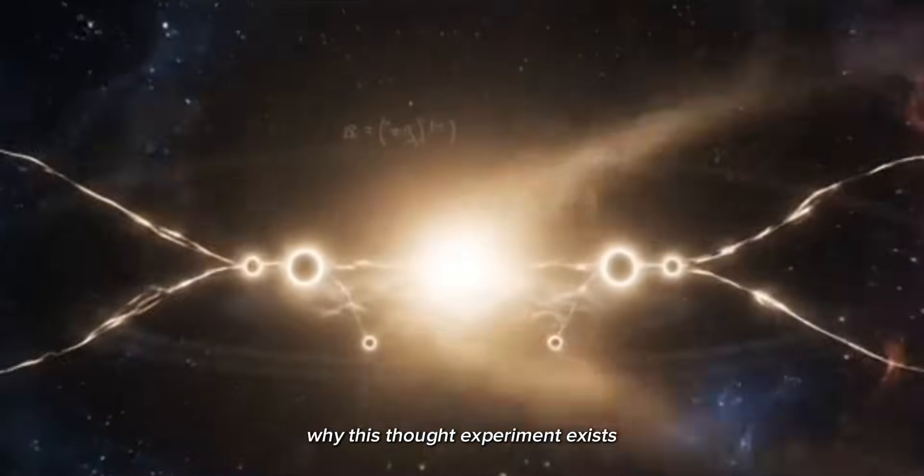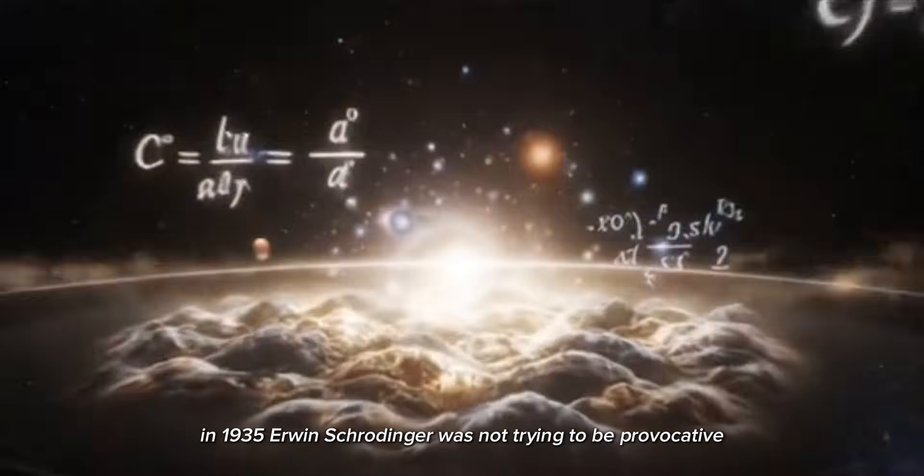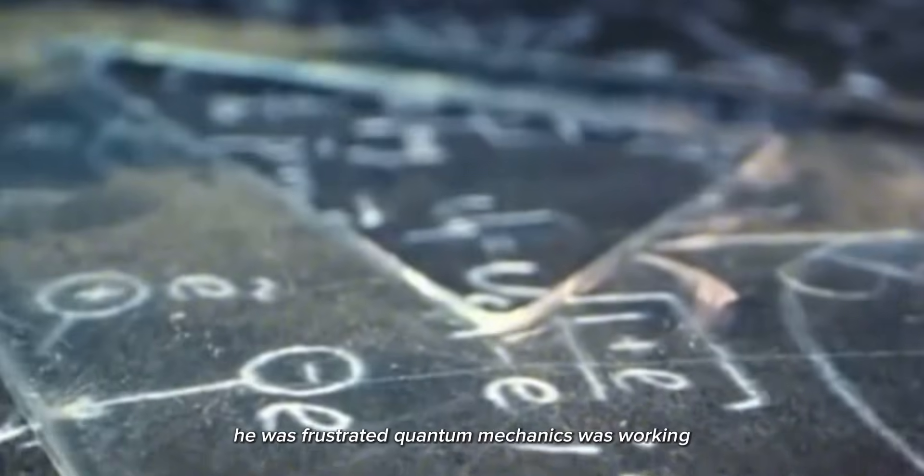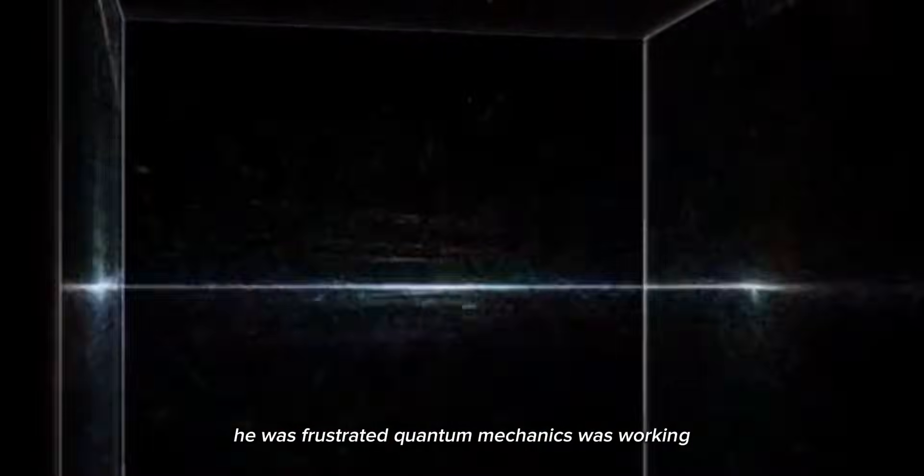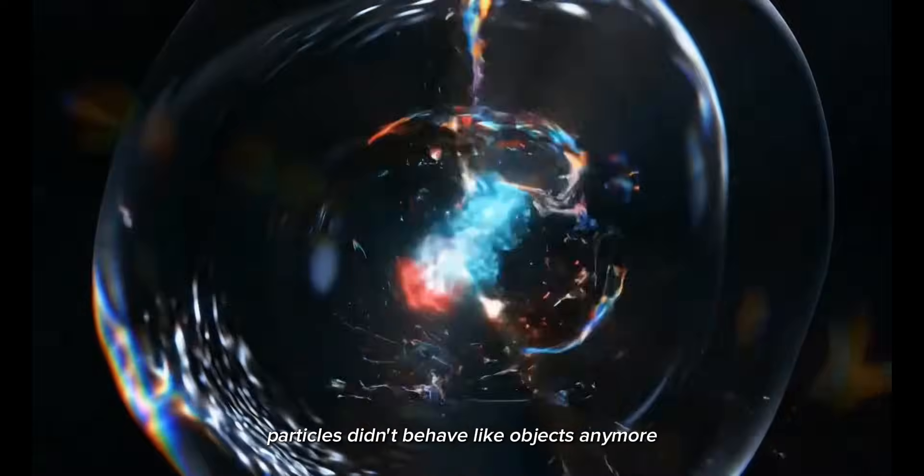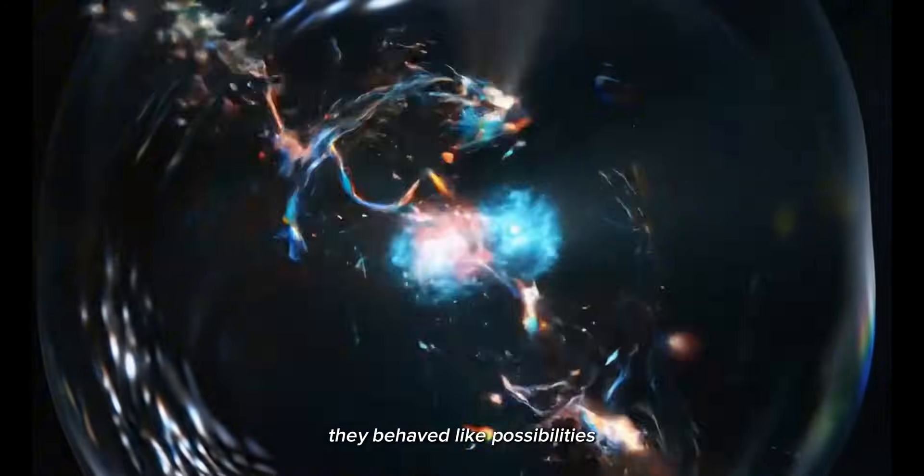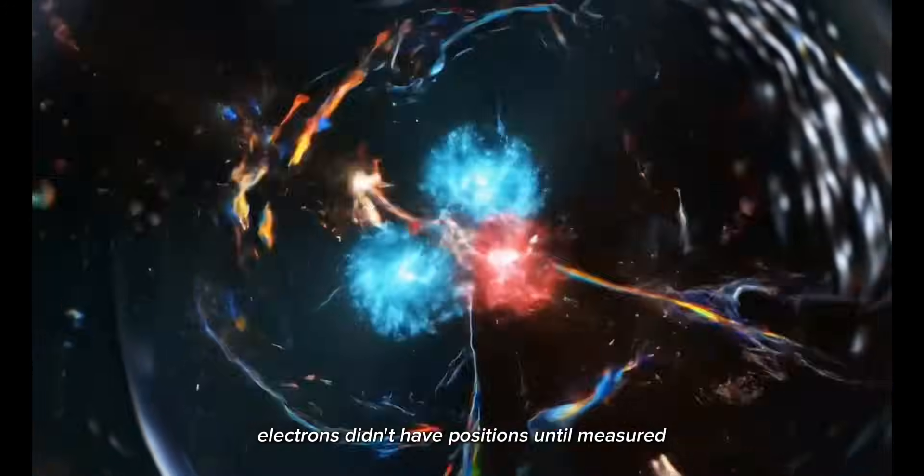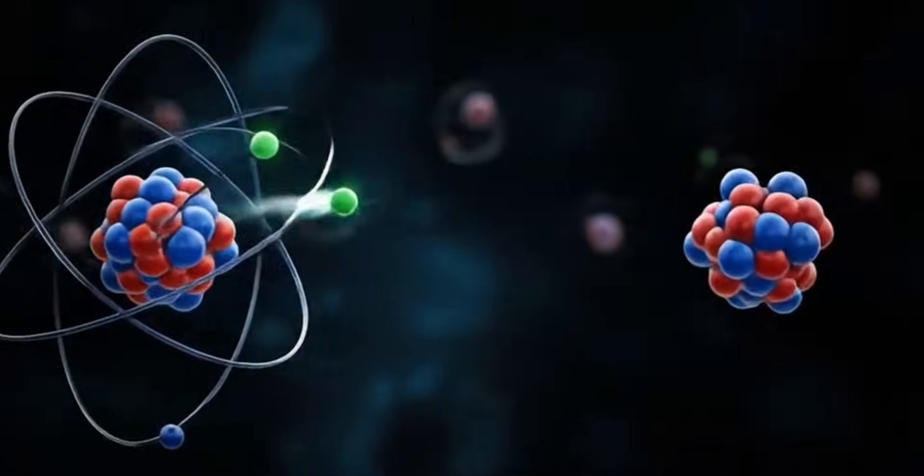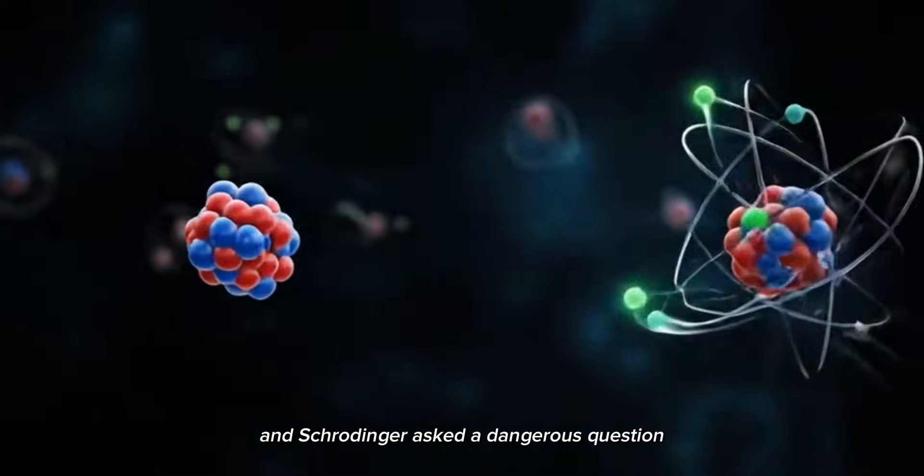Why this thought experiment exists. In 1935, Erwin Schrödinger was not trying to be provocative. He was frustrated. Quantum mechanics was working incredibly well. But its interpretation was disturbing. Particles didn't behave like objects anymore. They behaved like possibilities. Electrons didn't have positions until measured. Atoms didn't decide their fate until observed. And Schrödinger asked a dangerous question.